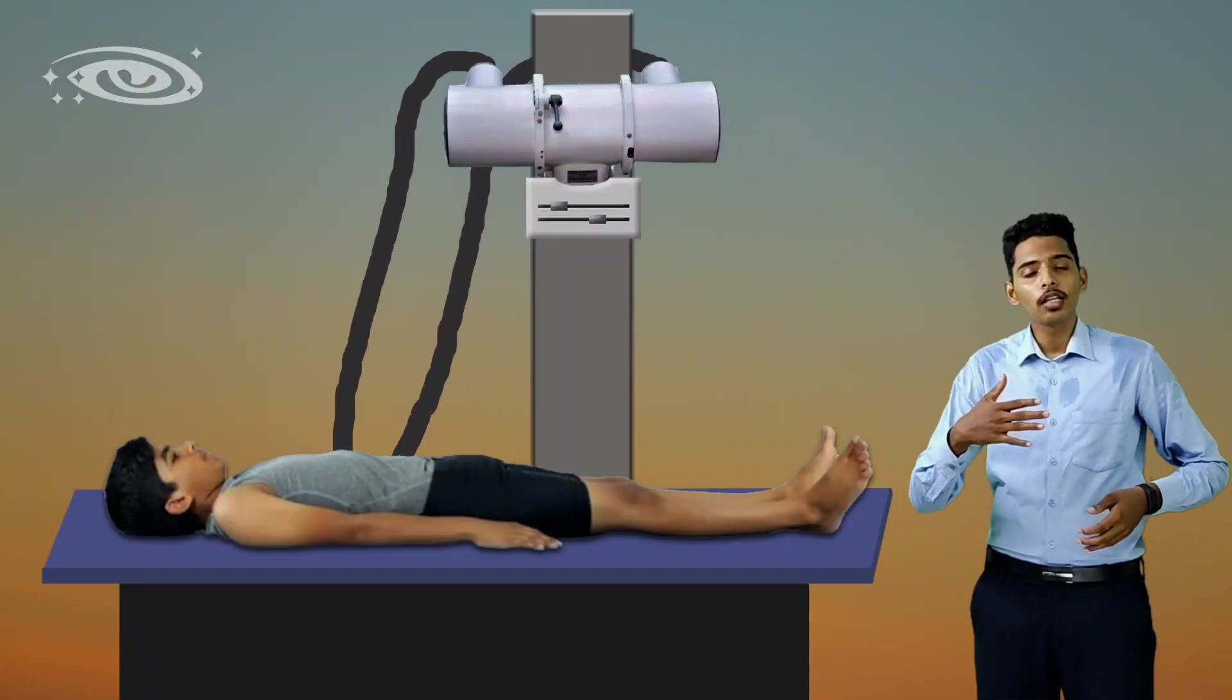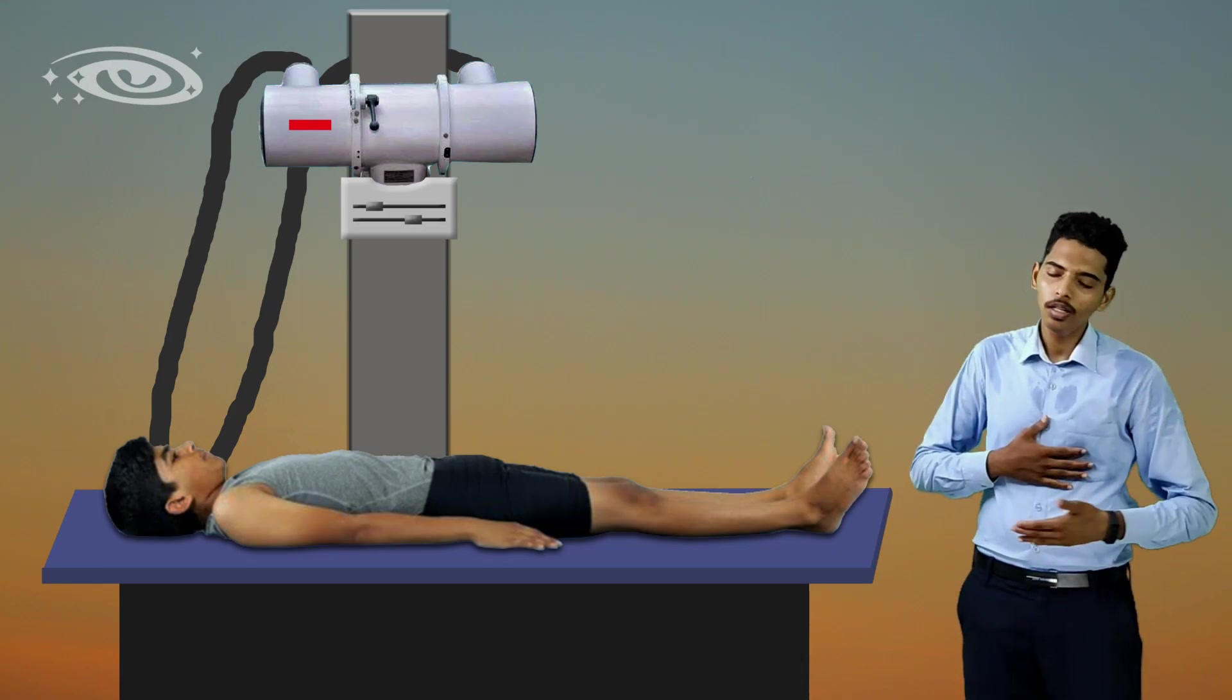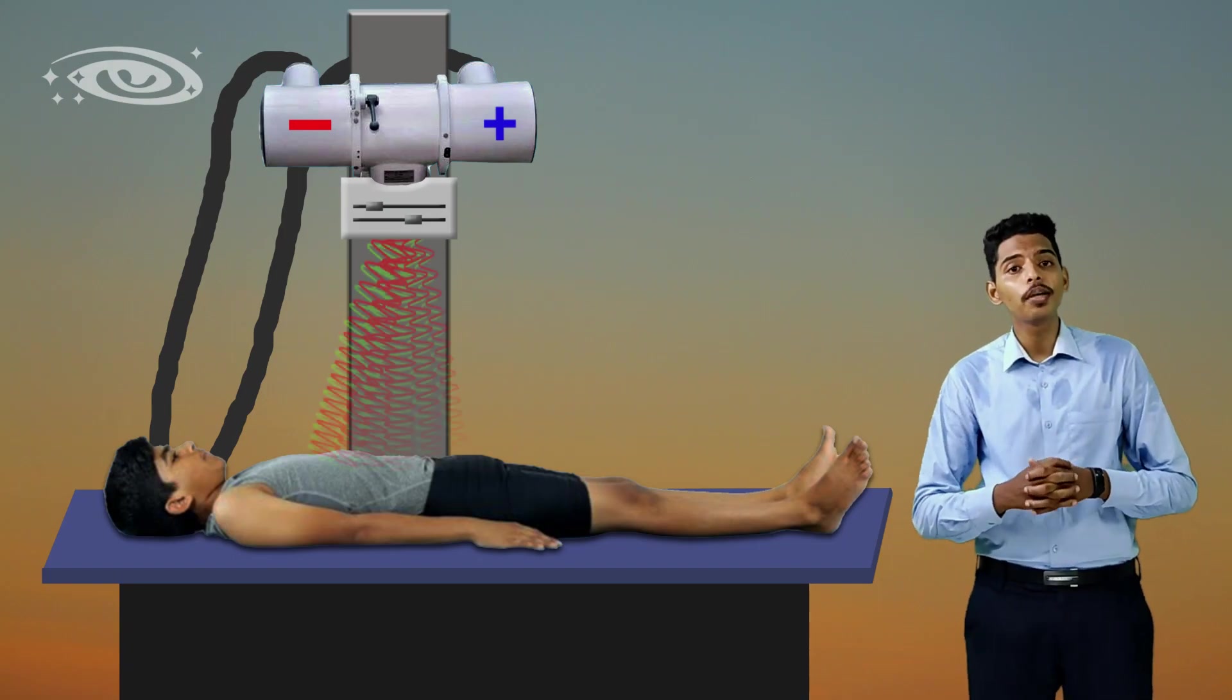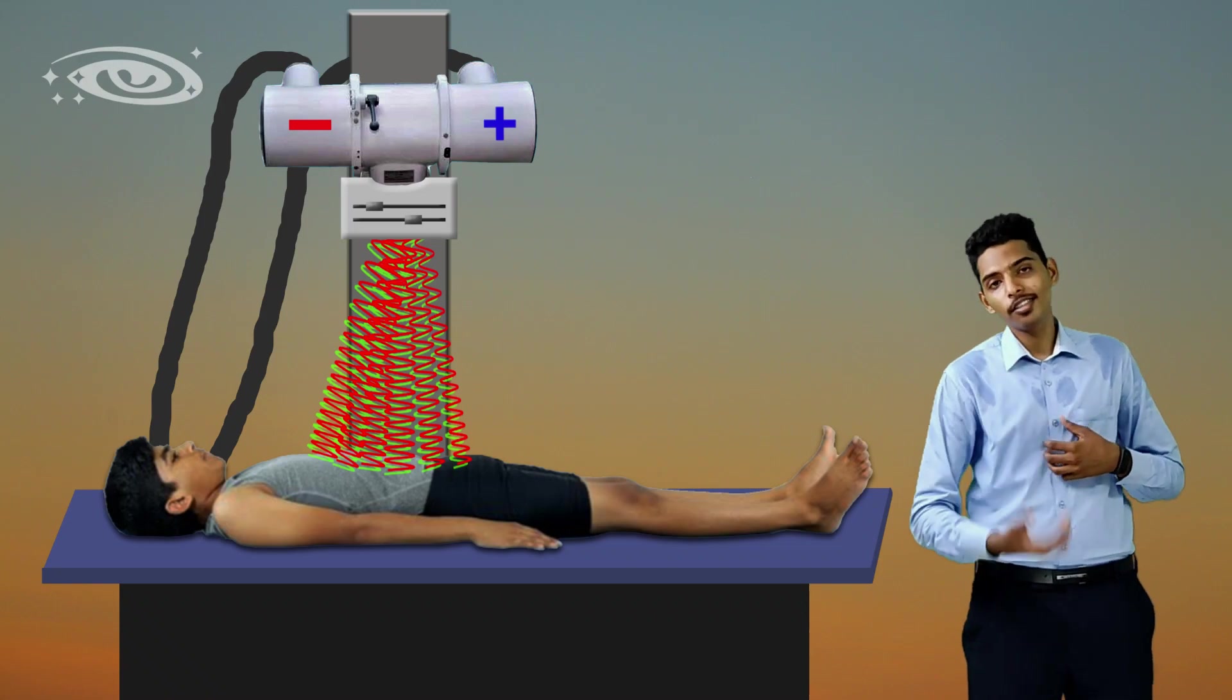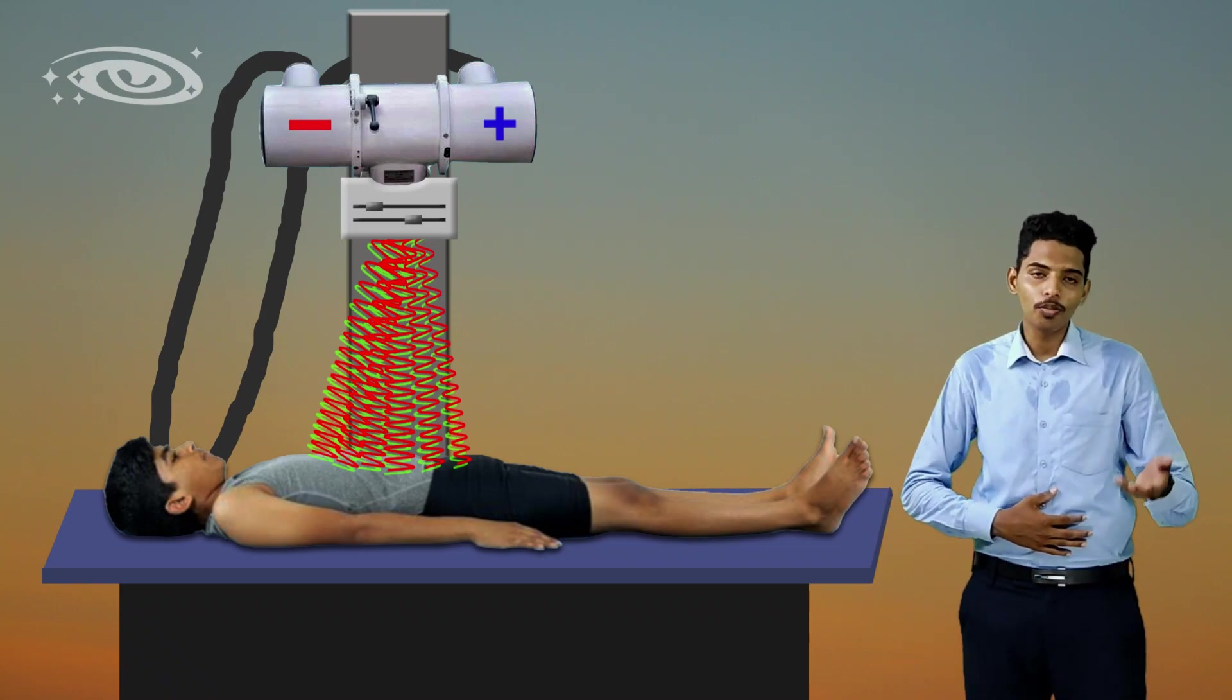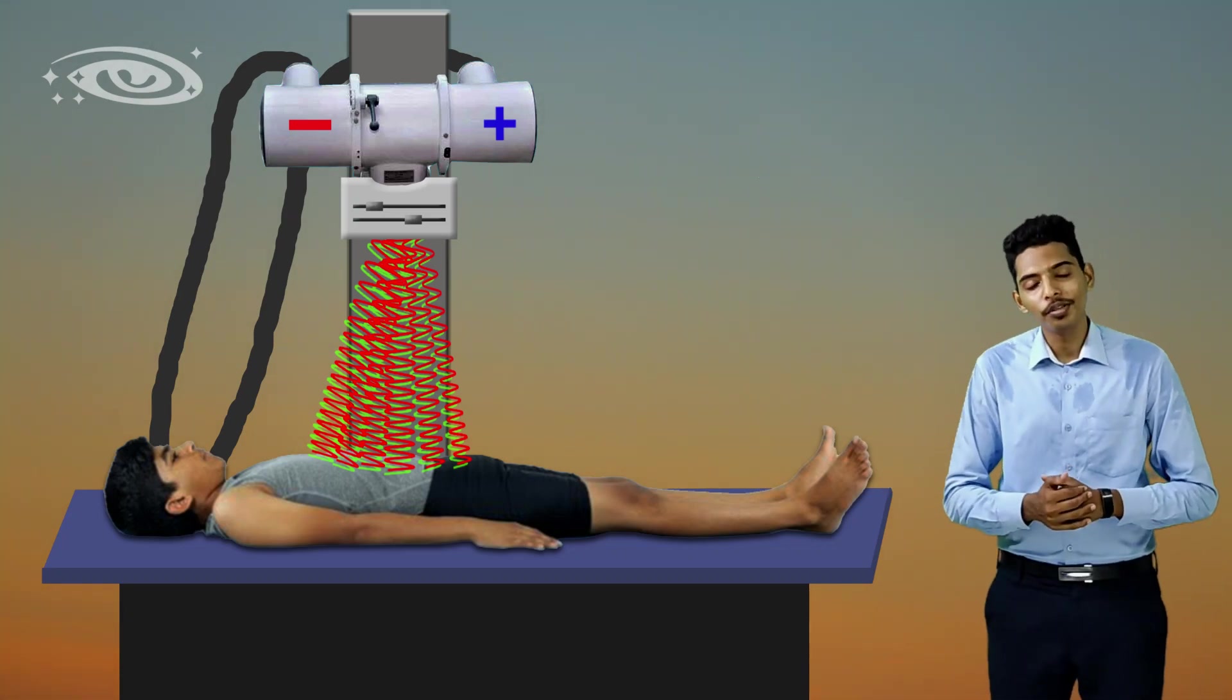So what I have to do is I am going to place my cathode side at the upper abdomen, and obviously my anode side comes at the lower abdomen. By placing the x-ray tube like this, the more intensity x-rays are going to penetrate the thicker region, and less intensity x-rays are going to penetrate the thinner region, and that is obviously your lower abdomen. So this is the way to rectify this anode heel effect problem.